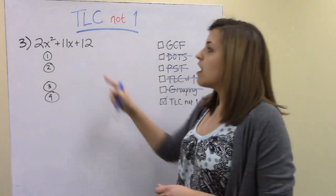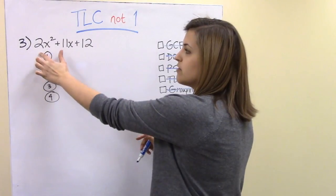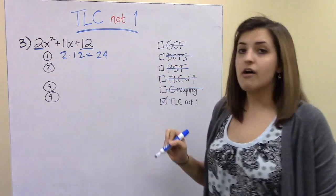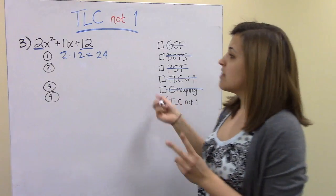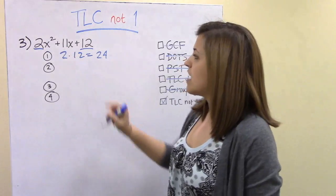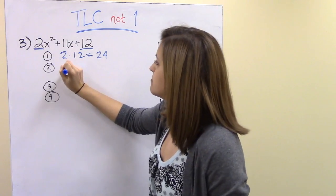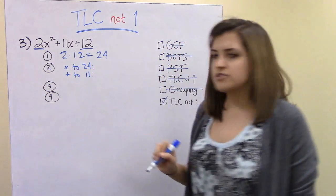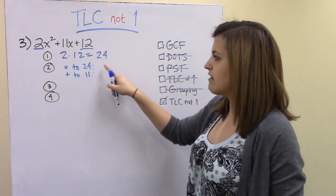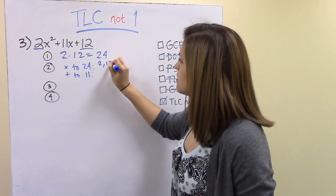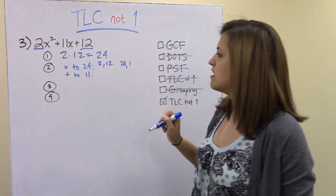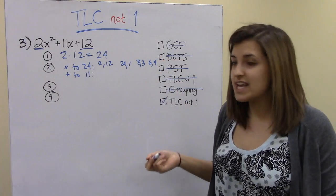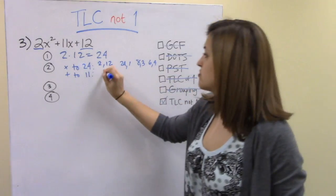Step one: multiply the leading coefficient and the constant term — 2 times 12 equals 24. Step two: find two numbers that multiply to 24 and add to 11. The possibilities include 2 and 12, 24 and 1, 8 and 3, or 6 and 4. The only pair that adds to 11 is 8 and 3, so we choose 8 and 3.